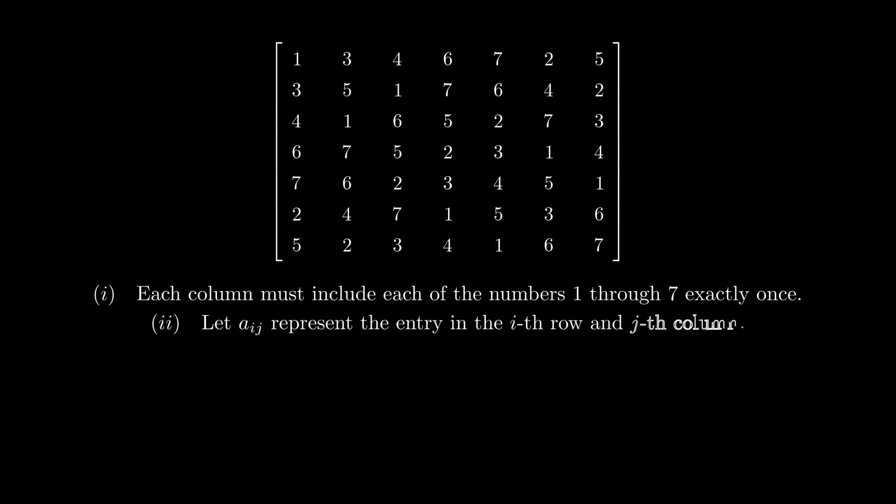Let aij represent the entry in the ith row and jth column. We must have aij equal to aji for all i and j between 1 and 7. For example, these two elements are equal. Similarly, these two elements are also equal.